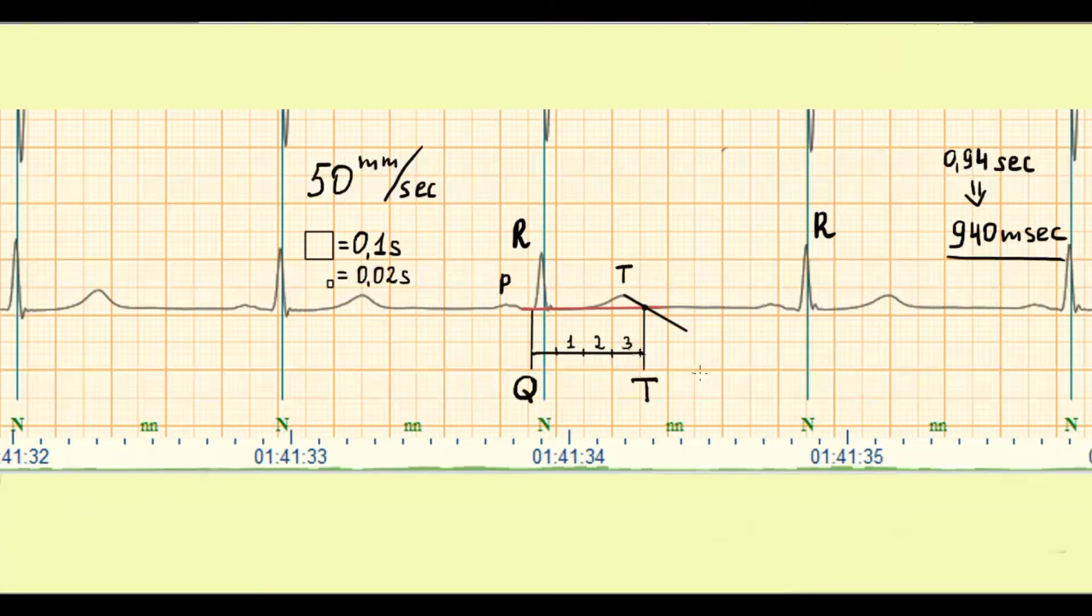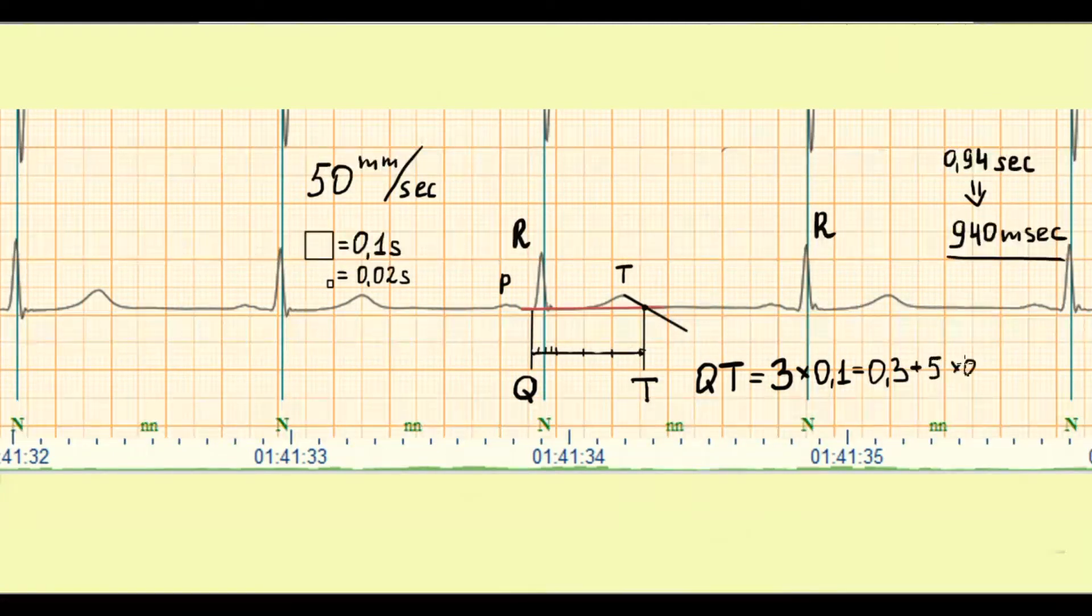QT interval is equal to 3 large boxes and 5 small boxes. The sum is 0.4 seconds or 400 ms.